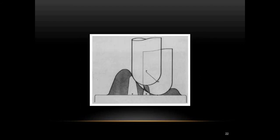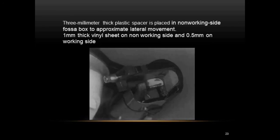When placing the resin cone, it must be positioned toward the outer edge of the pathway and always to the back side of the incisal pin — if placed in front, the incisal pin can crush the resin cone during excursion. To simulate lateral movement, a 3 mm thick plastic spacer is placed on the non-working side fossa box.